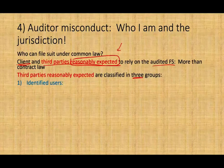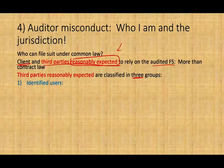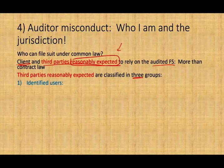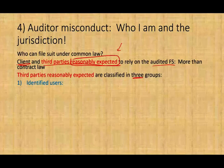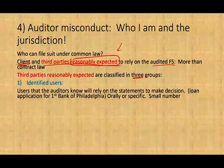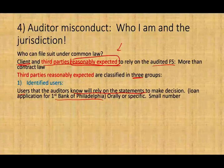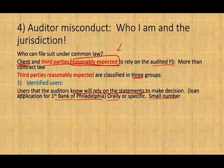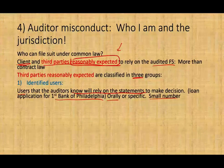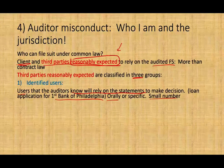The first group is called identified users — those the auditor specifically knows would rely on the financial statement. For example, if a client tells you they're going to the Bank of Philadelphia to get a loan, the Bank of Philadelphia becomes an identified user. You identified them — the client told you who they are, either orally or in writing. You could name two or three banks; those are all identified users.